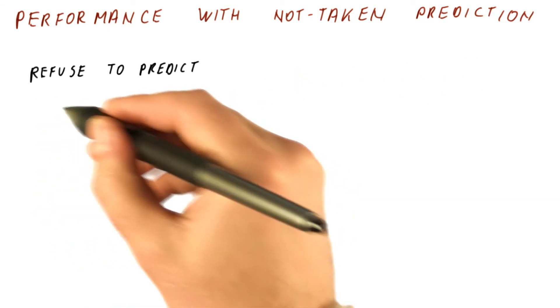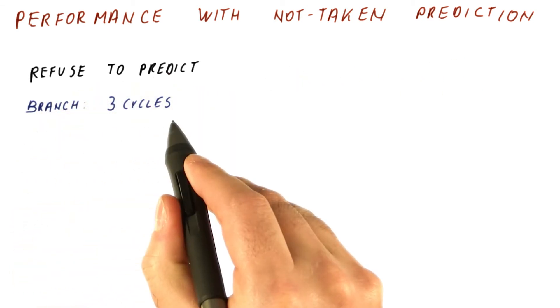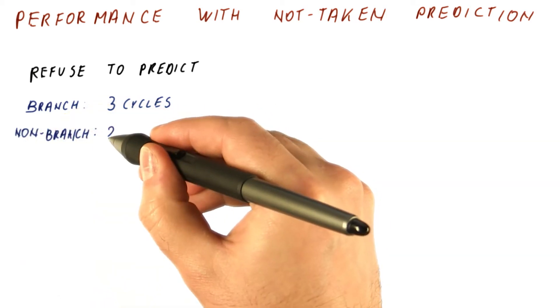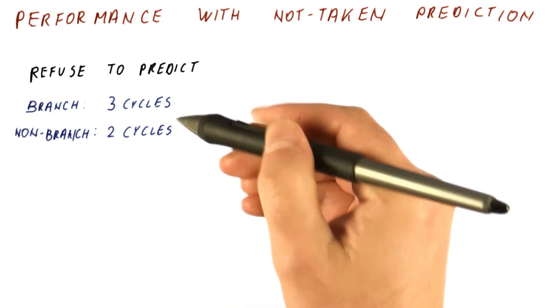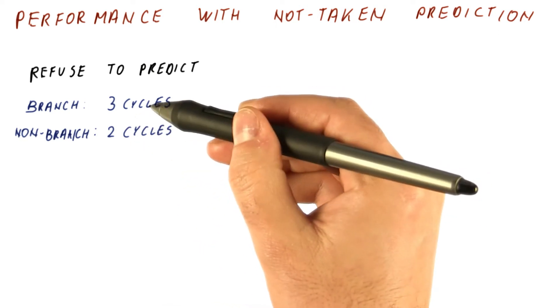When we refuse to predict anything, every branch would cost us three cycles, and even a non-branch instruction would cost us two cycles, even in a relatively shallow five stage pipeline.